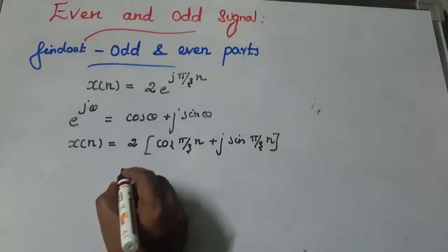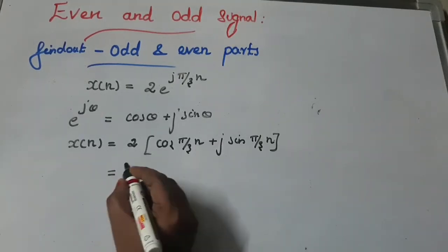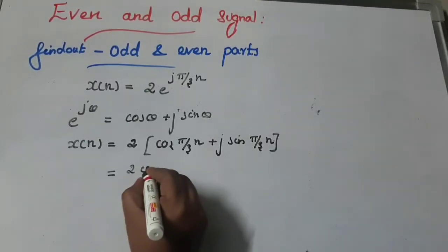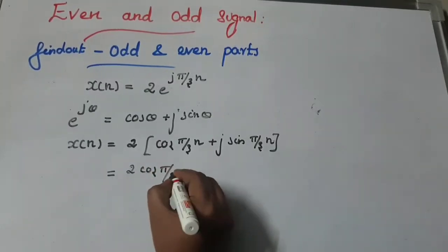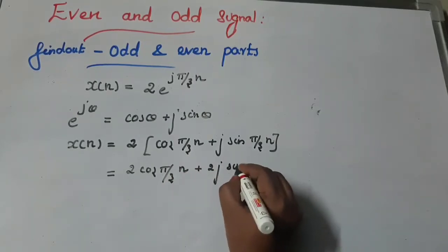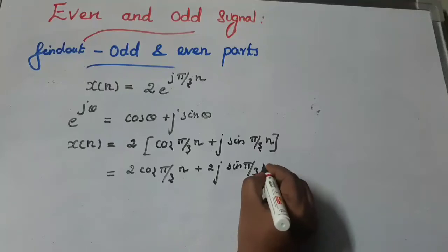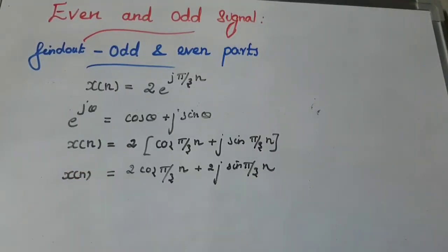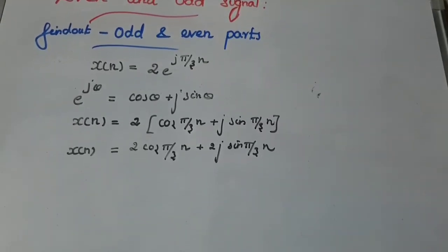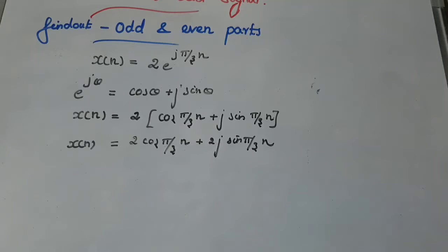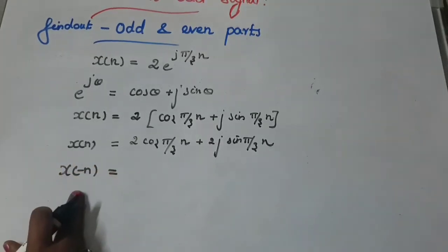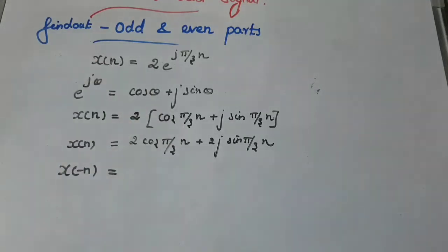Distributing the 2: x(n) = 2·cos(πn/3) + 2j·sin(πn/3). This is the expanded x(n) value. Next, we have to calculate x(-n). We know that x(-n) is the time-reversed version of the signal x(n).